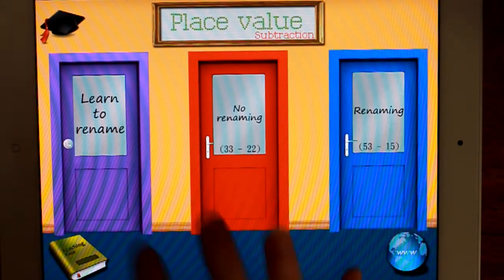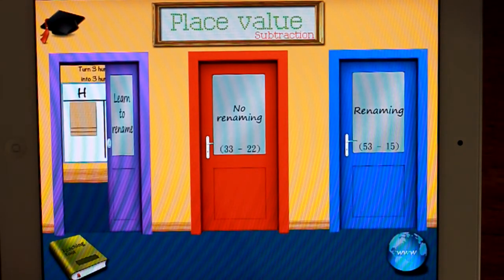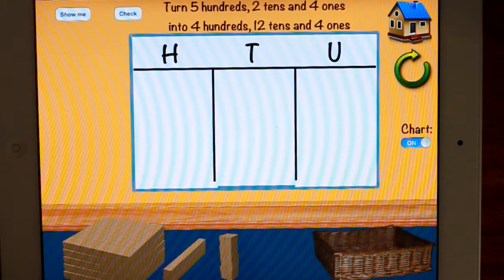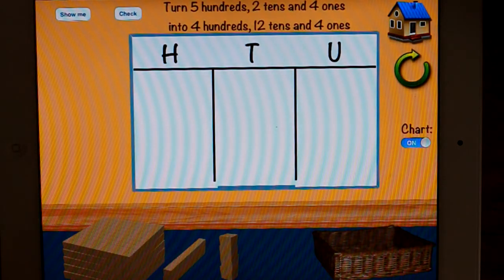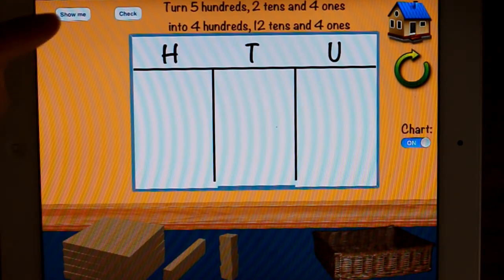Alright, let's have a look at learn to rename. You might call it something different. Alright, so the difficult thing with this is that there is a little bit of reading involved, which I suppose you would expect that children are able to read it well enough to complete the subtraction.